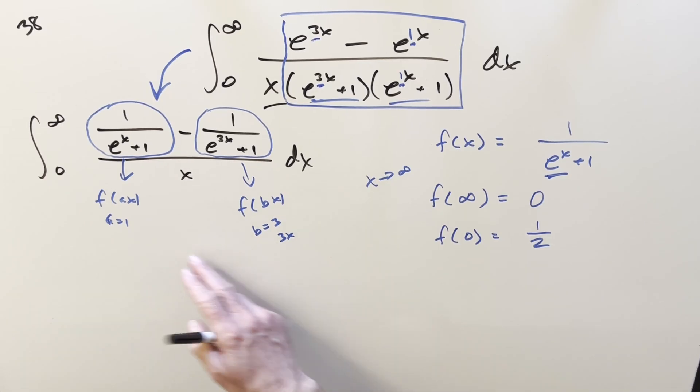And so this, along with our a and b values, is going to give us everything we need. So f at infinity, zero minus f at zero, one half times natural log. The a value is going to be one, the b value is going to be three.